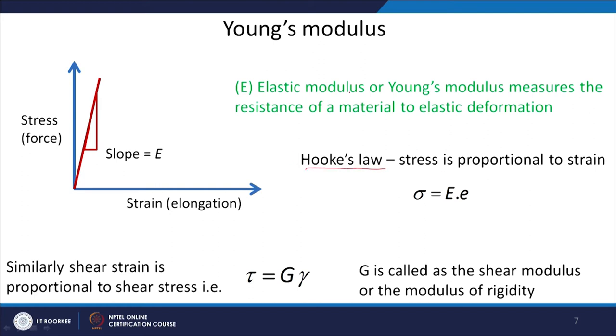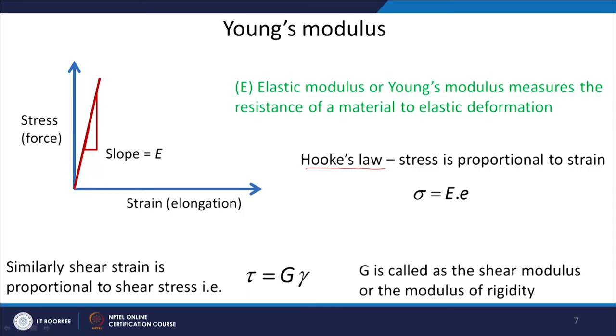Young's modulus measures the resistance of a material to elastic deformation. If you have a high elastic modulus, resistance is more — you require more stress for the same deformation. If a material has a low elastic modulus the slope will be small; if it has a very high elastic modulus the slope will be high. So it gives you a resistance to deformation — it is the response of the material in the form of stress when you are imposing strain.